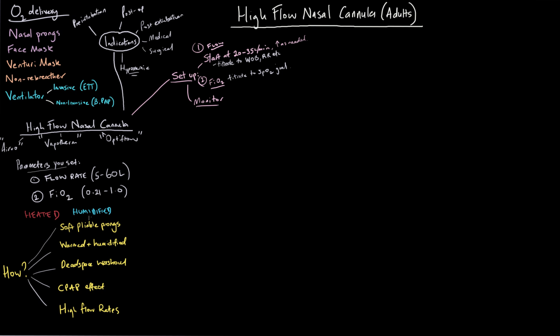Let's talk about the mechanisms by which high flow nasal oxygen helps patients. The prongs are soft and pliable, making a relatively snug fit in the patient's nose — this improves comfort compared to regular prongs and creates a small seal that reduces air entrainment and improves efficiency. The fact that the gas is warmed and humidified also reduces the patient's work of breathing and prevents nasal and upper airway dryness — without humidification, rates of epistaxis would be quite high at 60 liters per minute.